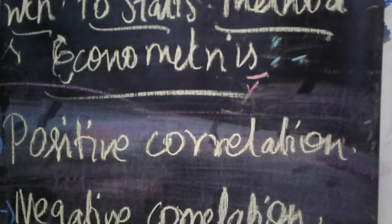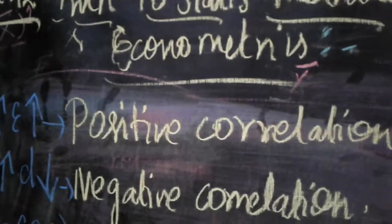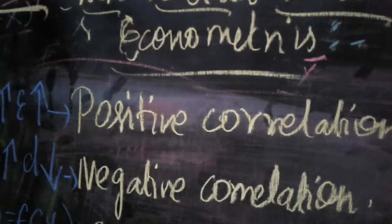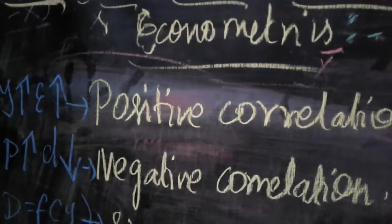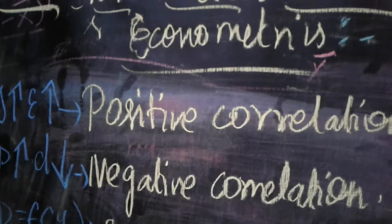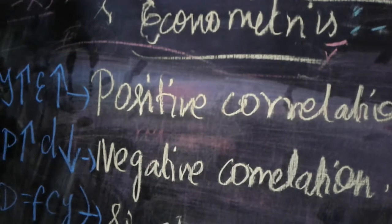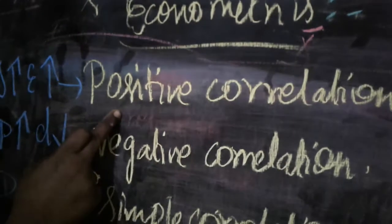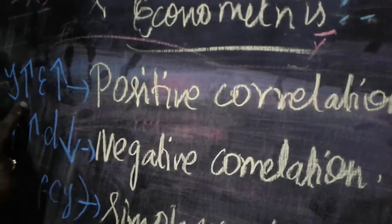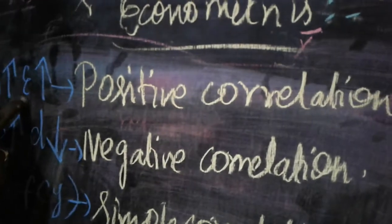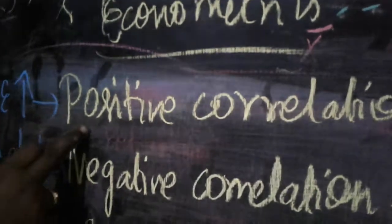Positive correlation: correlation means the relationship between two or more variables can be studied. Positive correlation means if any one of the variables increases, then the other variable also increases in the same direction. For example, in economics, if income increases, we also increase our expenses or consumption — so we call that a positive correlation.